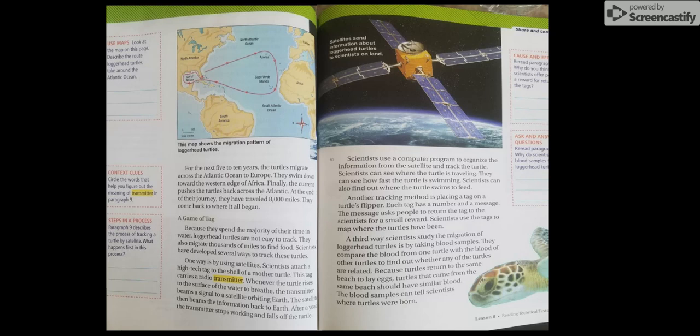Scientists use a computer program to organize the information from the satellite and track the turtle. Scientists can see where the turtle is traveling. They can see how fast the turtle is swimming. Scientists can also find out where the turtle swims to feed. Another tracking method is placing a tag on a turtle's flipper. Each tag has a number and a message. The message asks people to return the tag to the scientists for a small reward. Scientists use the tags to map where the turtles have been.